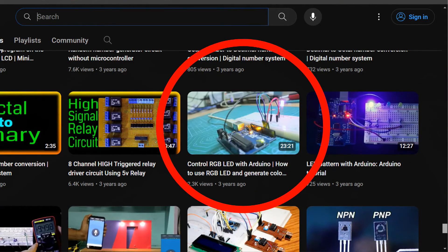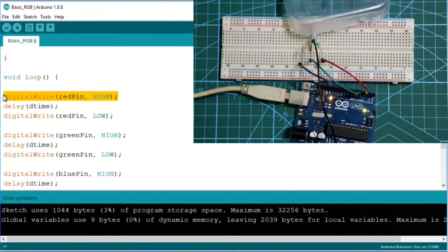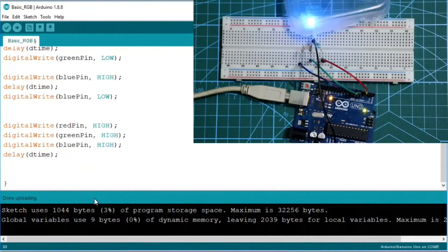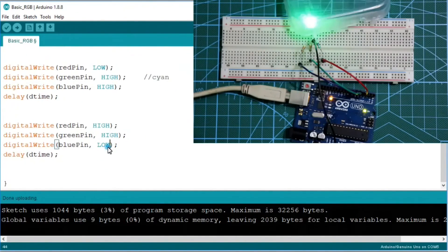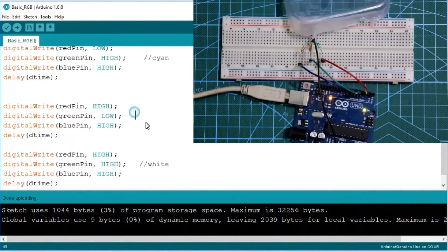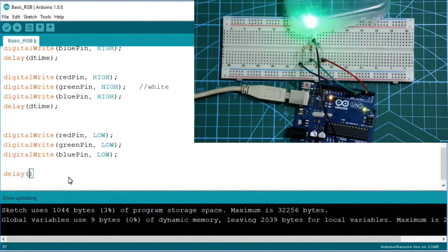And if you want to know more about RGB LED then you can watch this video. In this video I have explained RGB LED with Arduino. The link is given in the description below.